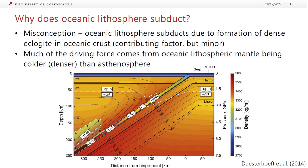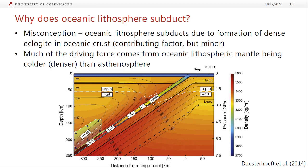Once the slab gets deep enough — where it says 'plus garnet' — we have made eclogite and now this does help pull the slab down, but fundamentally the slab is dense mainly because the mantle is cold. Subduction is the main driving force behind plate tectonics. This is shown in a famous 1970s paper comparing plate speeds to various factors: the biggest correlation is with the proportion of the plate boundary made up of subduction zones, not plate size.